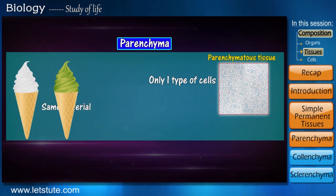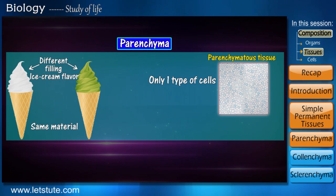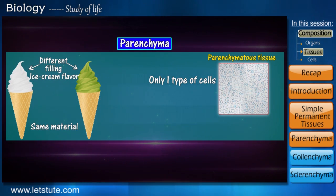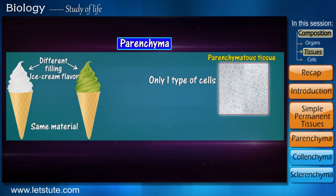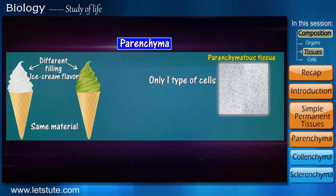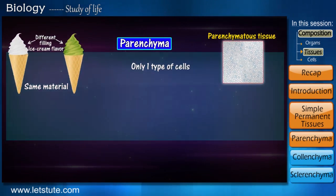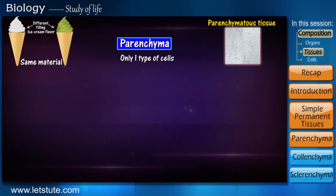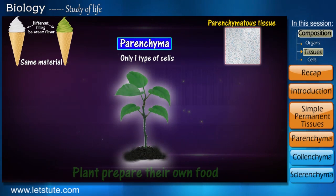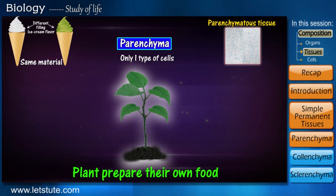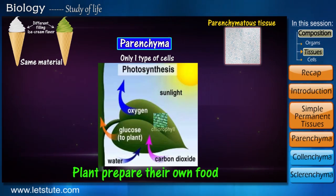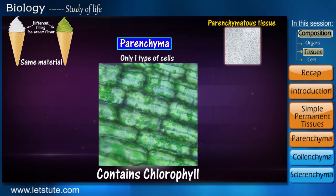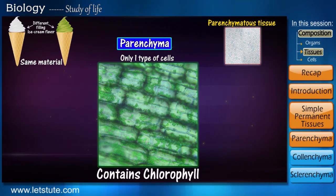Let's consider two different ice cream flavors. The cone is the same for all ice creams, but it is the ice cream filling that defines it. Similarly, parenchyma cells are similar to each other, but depending on what is present inside them, they are known differently. Plants need to prepare their own food, which they do using a green pigment for performing photosynthesis.